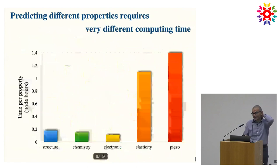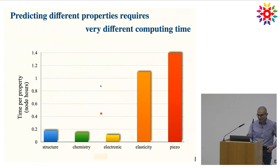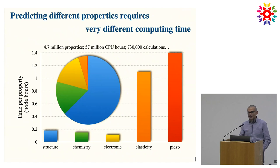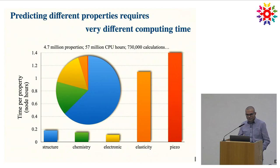When you look at the databases, the amount of data available for different properties is very different, because the computational time is very different. If you need to compute something about the structure, the chemistry, or the electronic properties, that's relatively easy. But if you want to compute a response function like elasticity or piezoelectricity, that requires much more time. As a result, most of the data available in all these databases are about ground state properties — the structure, chemistry, and electronic properties — but not the more advanced ones.